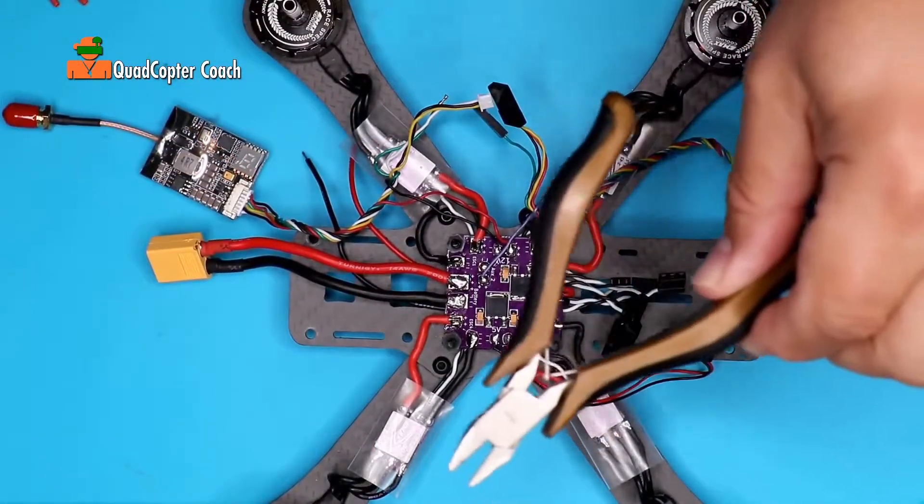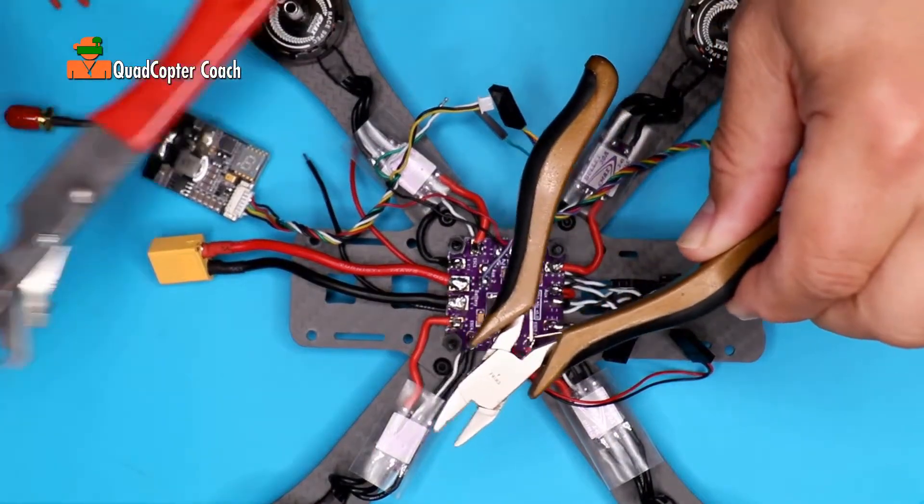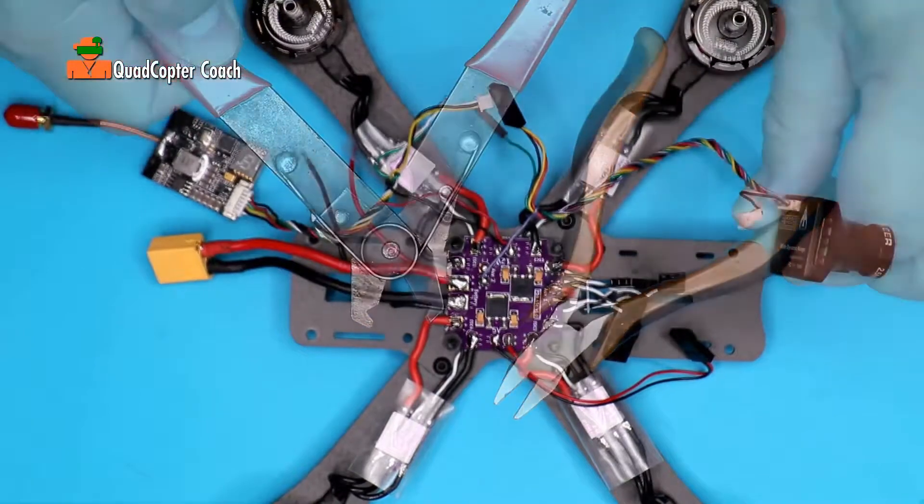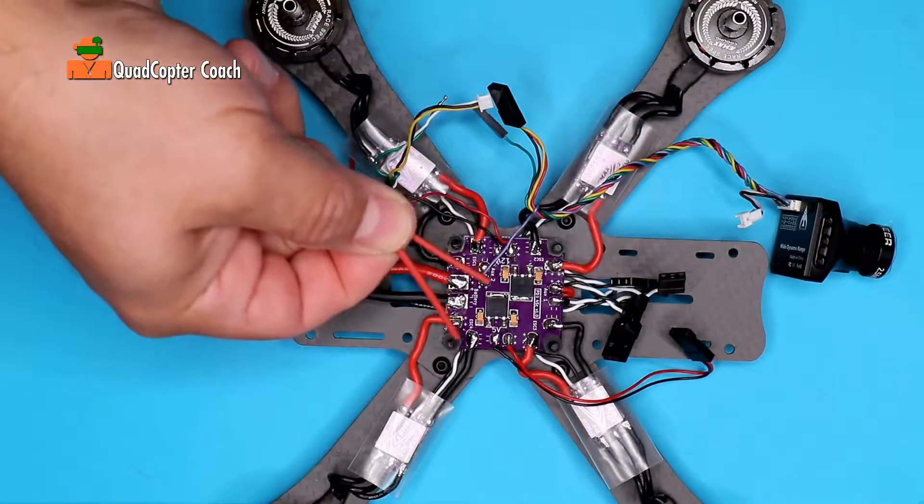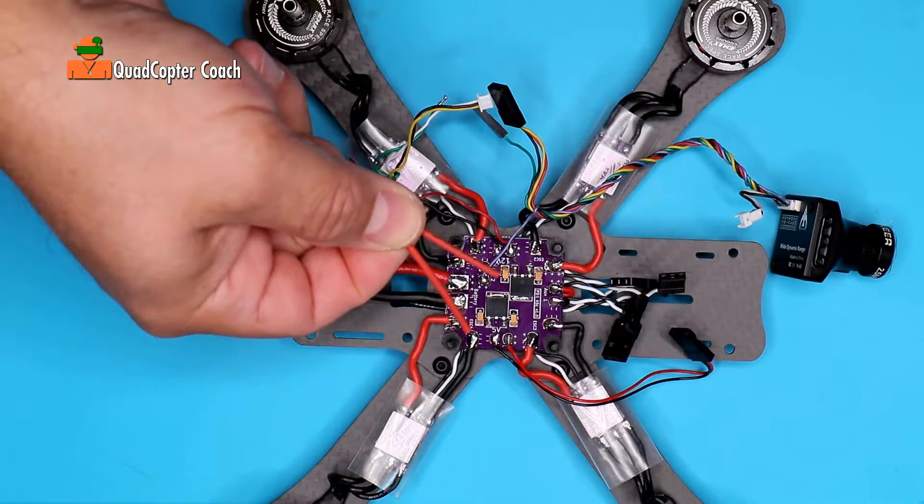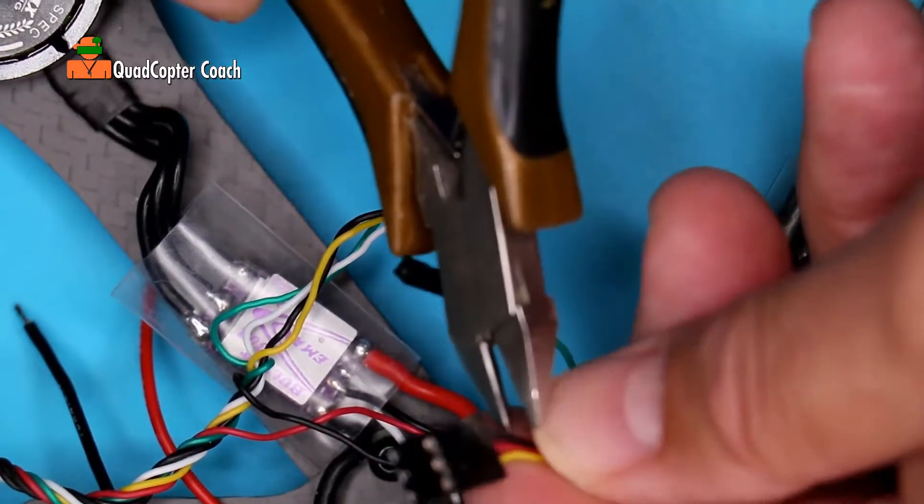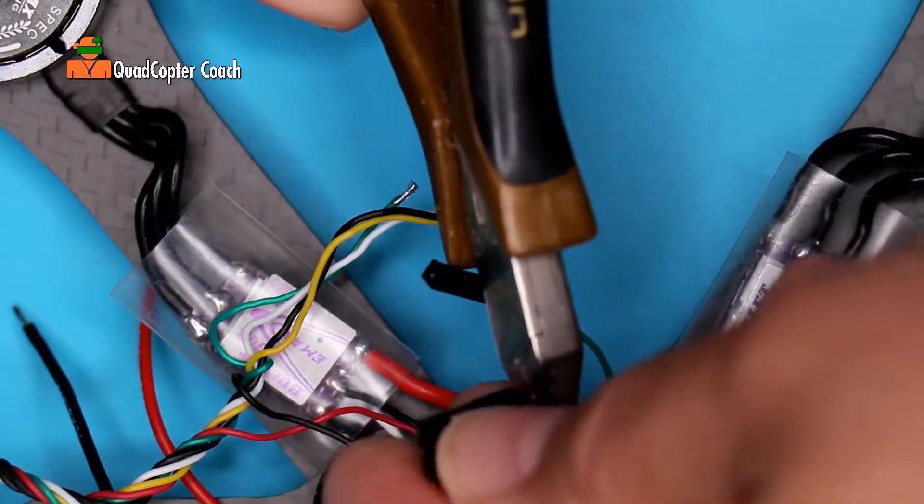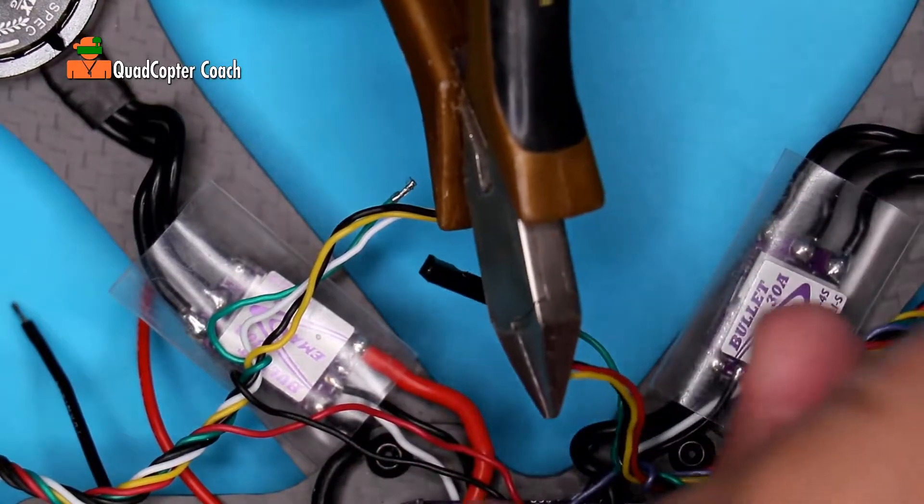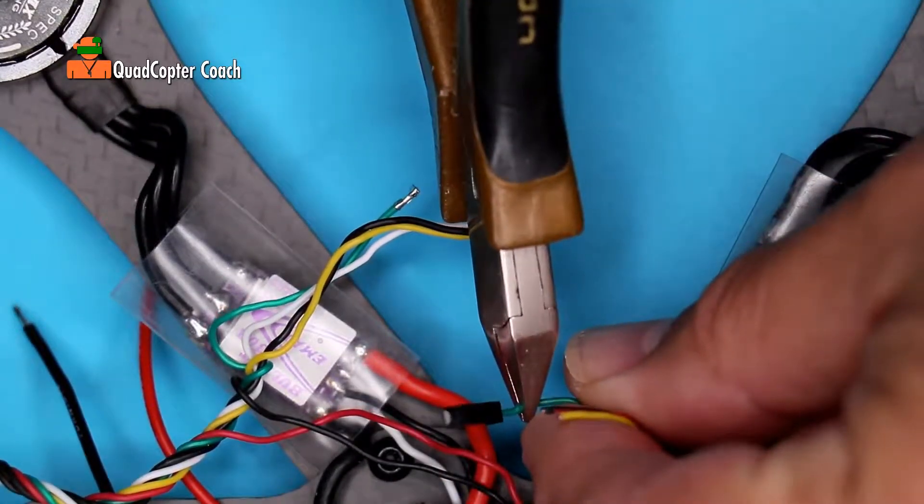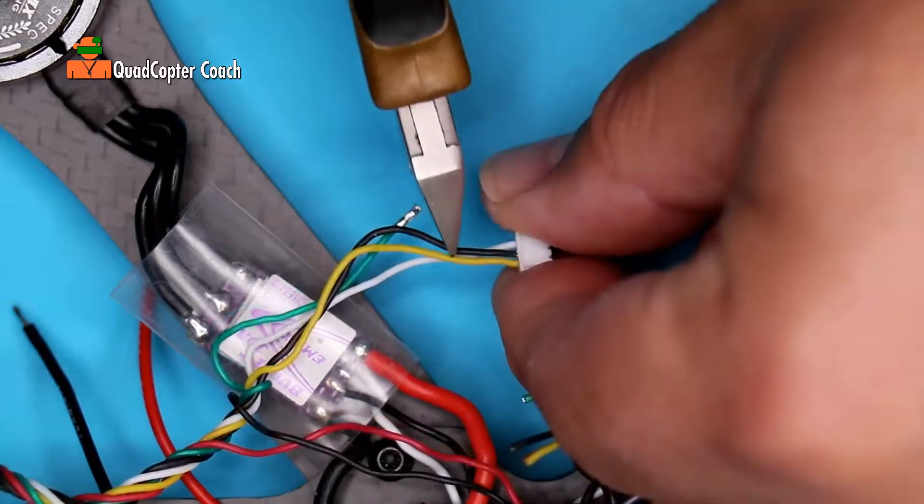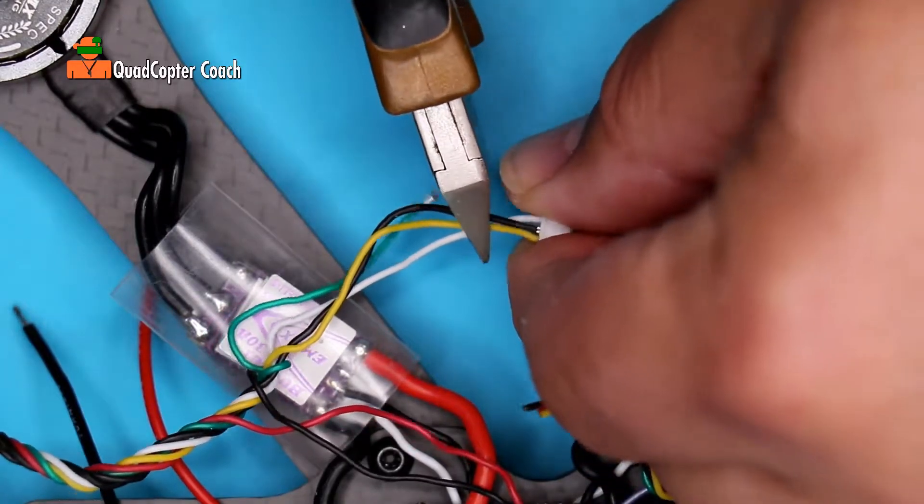To do this job we need our diagonal cutters and our wire strippers. We're also going to need a few pieces of shrink tube to fit these wires. We begin with our diagonal cutters. Simply grab any of the wires and snip off the ends. Just like that. Cleanly just cut the wires off.